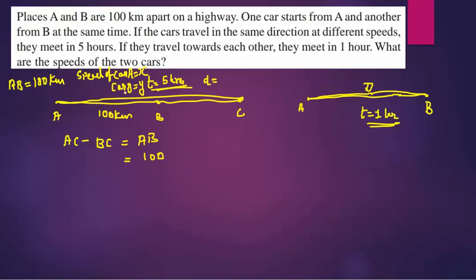is y kilometers per hour. What will be the distance of car A, AC? Speed into time. Here the speed is x and time is 5, so you can write 5x. Speed into time, speed is x and time is 5.